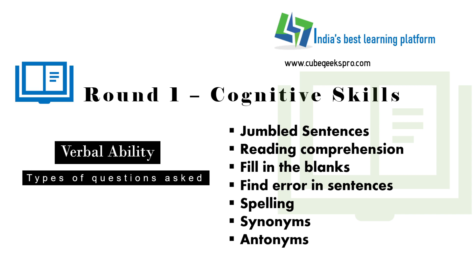For jumble sentences, you will have sub-points with sentences that you need to arrange into a meaningful sequence. Then for reading comprehension, you will be given a passage to read, with sub-questions that you have to answer. Sometimes synonyms and antonym questions are also asked within the comprehension. Synonyms are words which have a similar meaning to the given word, and antonyms are words that have the opposite meaning.